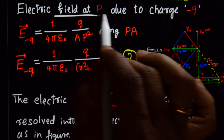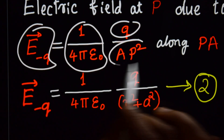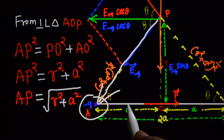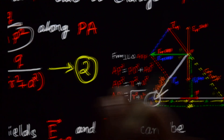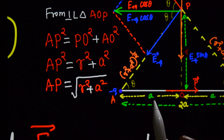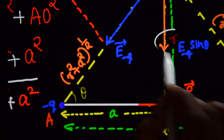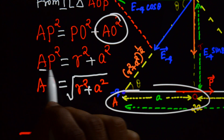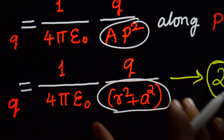Electric field at P due to the charge −Q is: E₋Q = (1/4πε₀) × Q / AP², along PA (towards the negative charge). From the right-angle triangle POA, using Pythagoras: AP² = PO² + AO² = R² + A². So AP² = R² + A². This is our second equation.